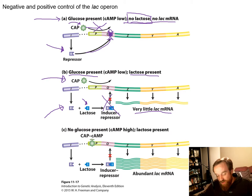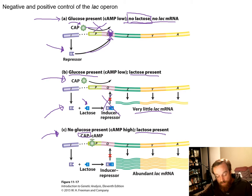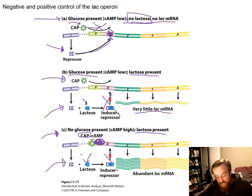Third example: no glucose, lactose present. With low glucose, we have a lot of cyclic AMP. Cyclic AMP binds to CAP, which actively brings transcription machinery to the promoter because it's an activator. Looking at the repressor: it's constitutively expressed, senses lactose in the environment, and because lactose is there it won't repress either. So not only are we not repressing, but we're actively turning on the gene — we get an abundant amount of lac mRNA to break down that lactose, especially since we need it now that there's no glucose around.